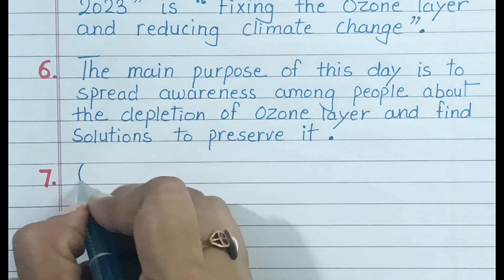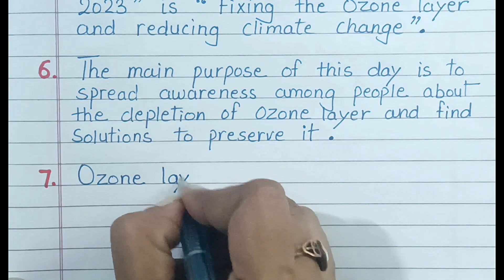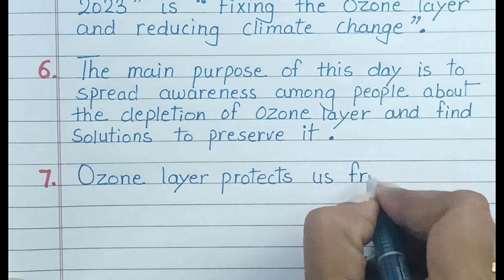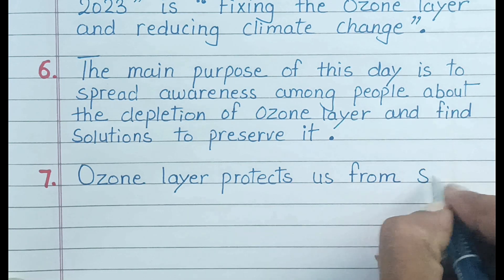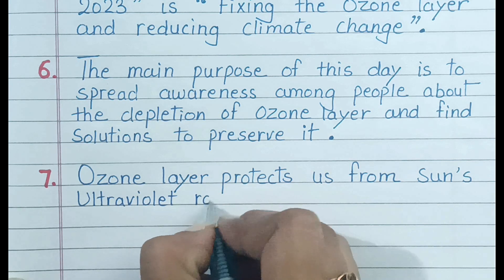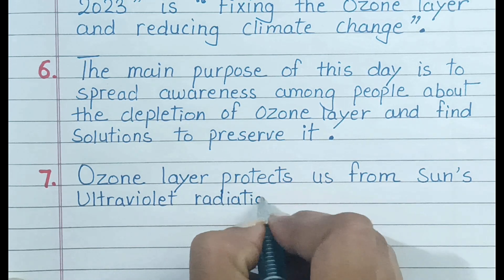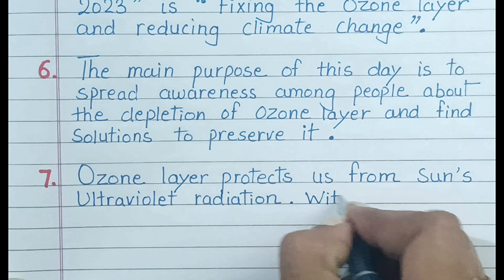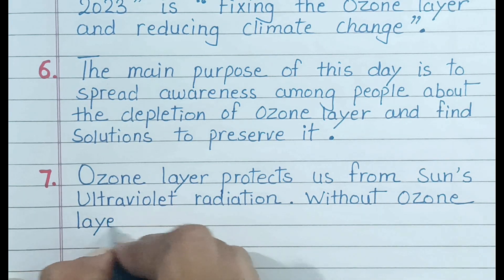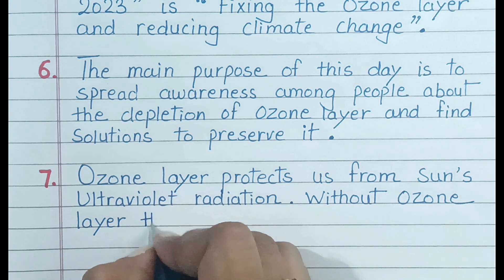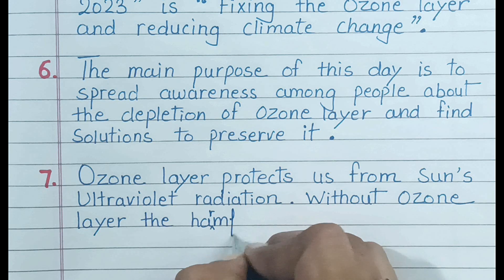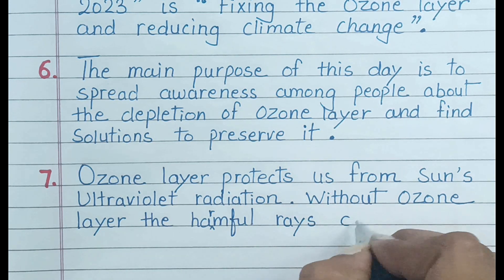Number 7: The ozone layer protects us from the sun's ultraviolet radiation. Without the ozone layer, the harmful rays can harm us.